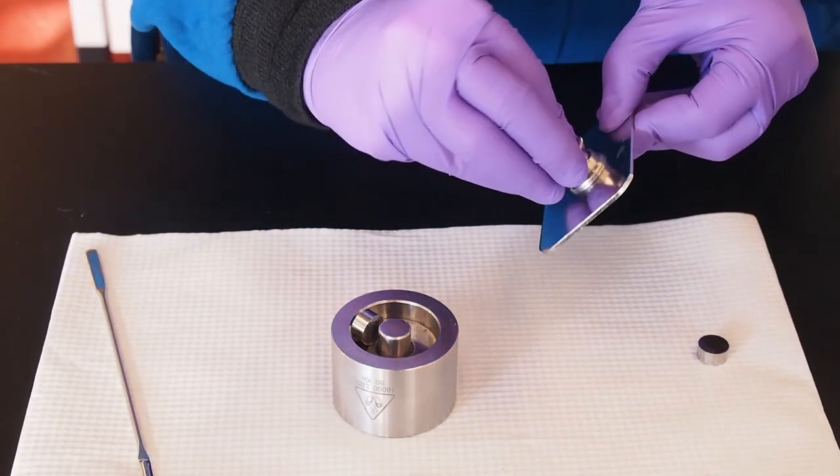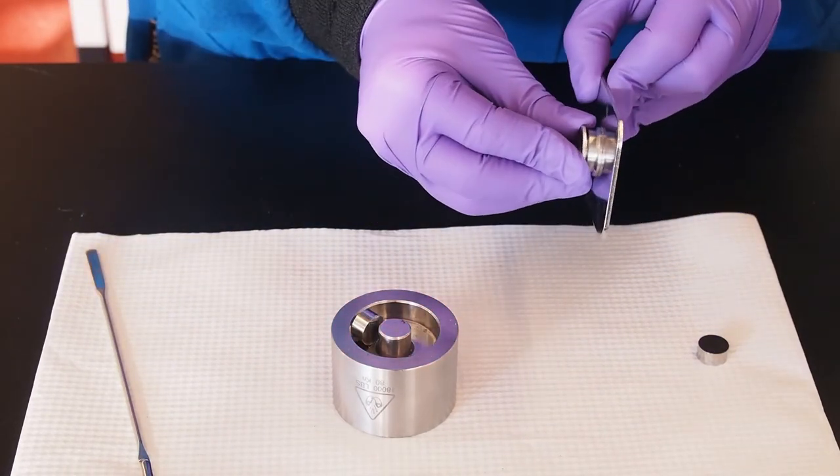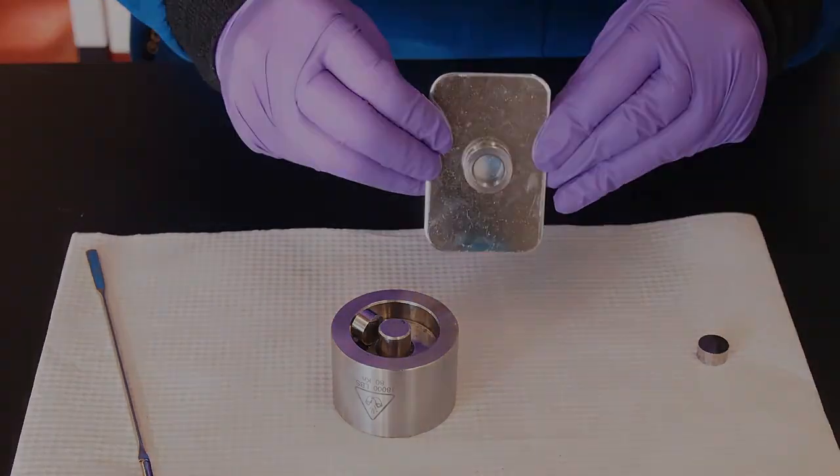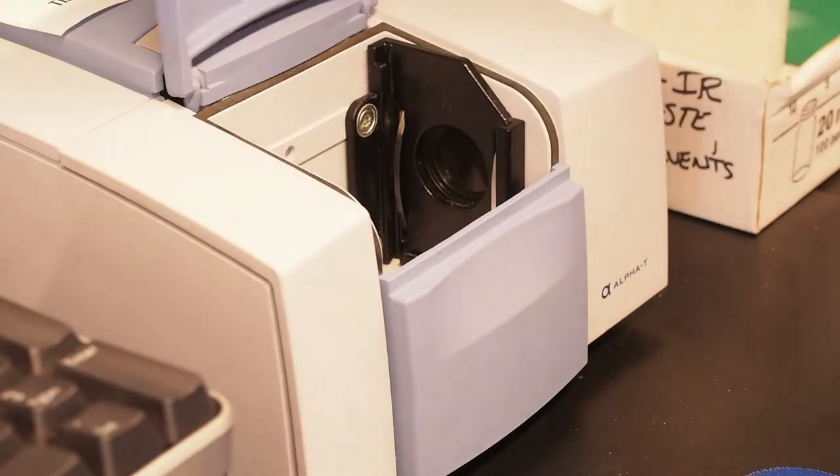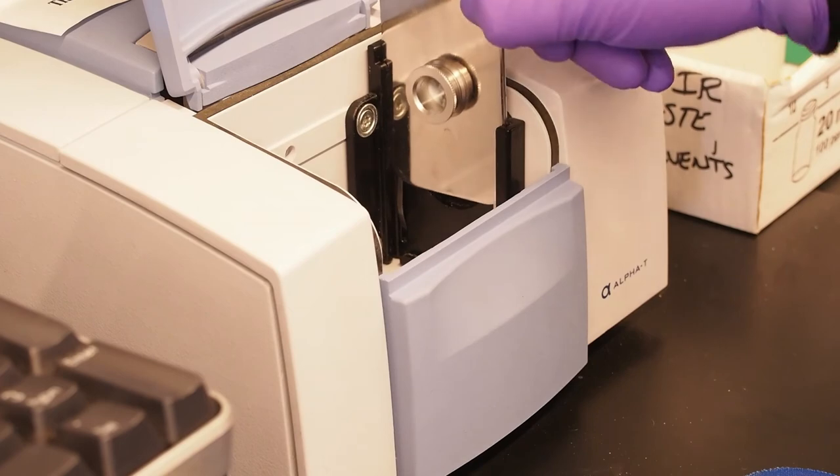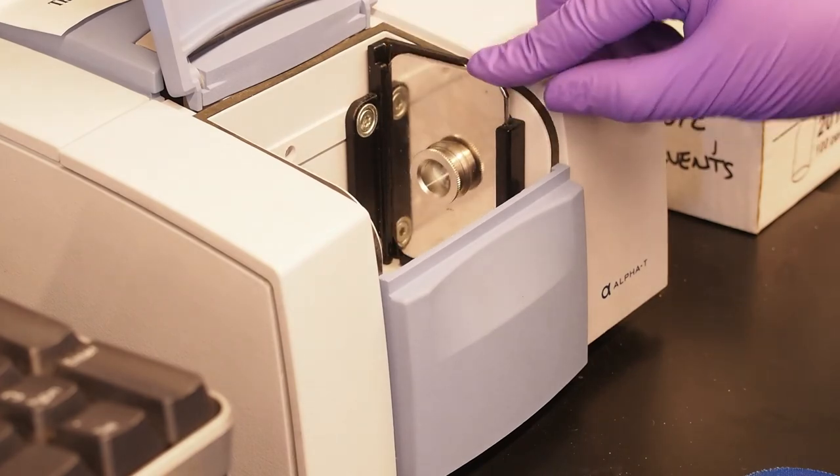Close the holder and take the assembly to the IR spectrometer which should be set up with the transmission accessory. Carefully insert the pellet holder into the transmission sample slot. You are now ready to analyze your sample.